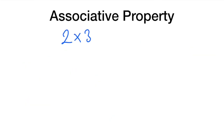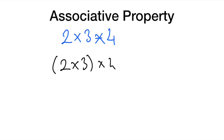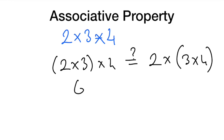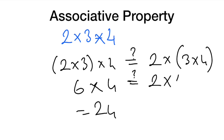What about multiplication? Let's say two times three times four. If we multiply two and three first, then multiply by four: two times three is six, and six times four is twenty-four. Alternatively, three times four is twelve, and two times twelve is twenty-four. They are exactly the same, so multiplication has the associative property too.